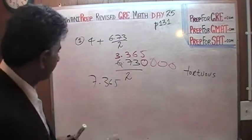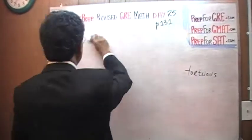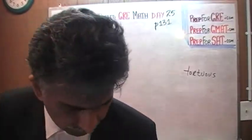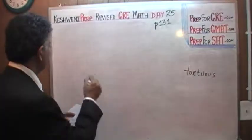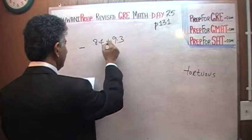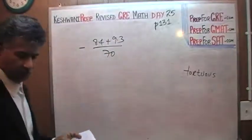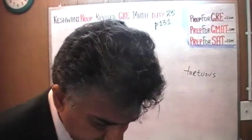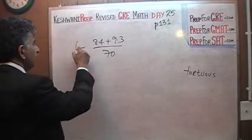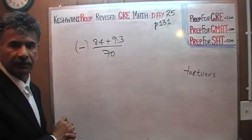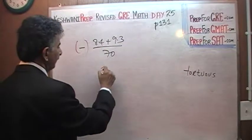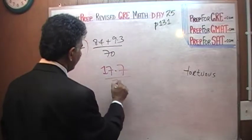The second problem they give you demonstrates the same point. Do not waste your time doing every single step in the calculator. Here it is: negative 8.4 plus 9.3 over 70. The very first thing to understand is: forget the negative part. There's no reason to put the negative into the calculator. Just remember it's negative. Do it out: 8.4 plus 9.3 — that's 17.7 over 70.